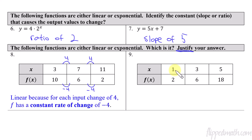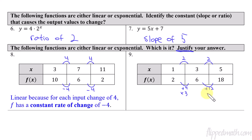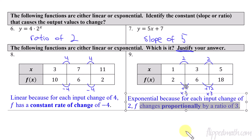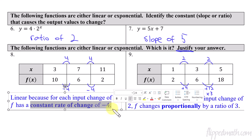This next one is exponential. The x values go from 1 to 3 to 5 — a change of 2 each time. Checking addition: 4 then 12 — not the same. Checking multiplication: 2 times 3 is 6, and 6 times 3 is 18 — so the ratio is 3. The justification: the function is exponential because for each input change of 2, f is changing proportionally by a ratio of 3. The key is showing that it's changing proportionally by a ratio, which demonstrates it's exponential.